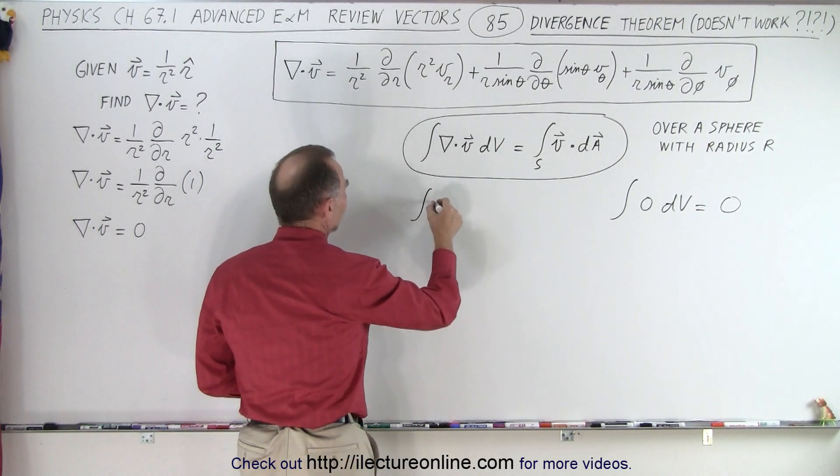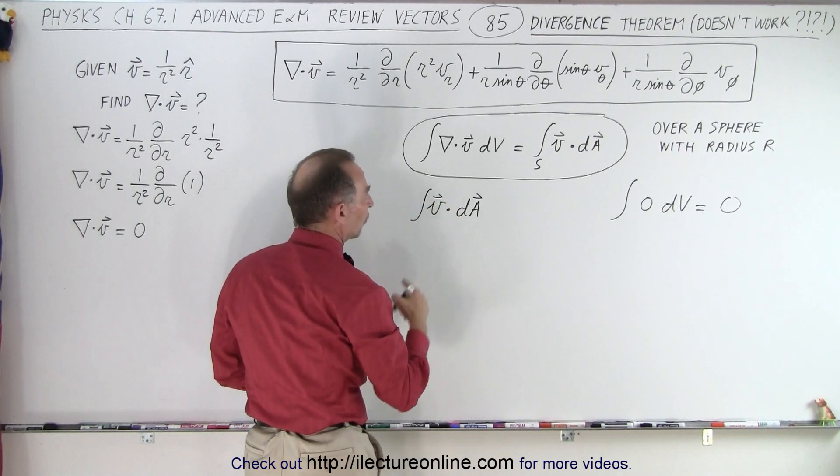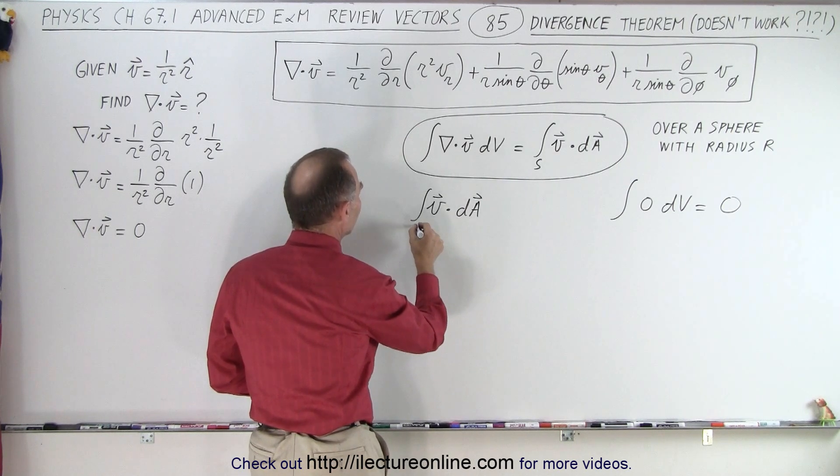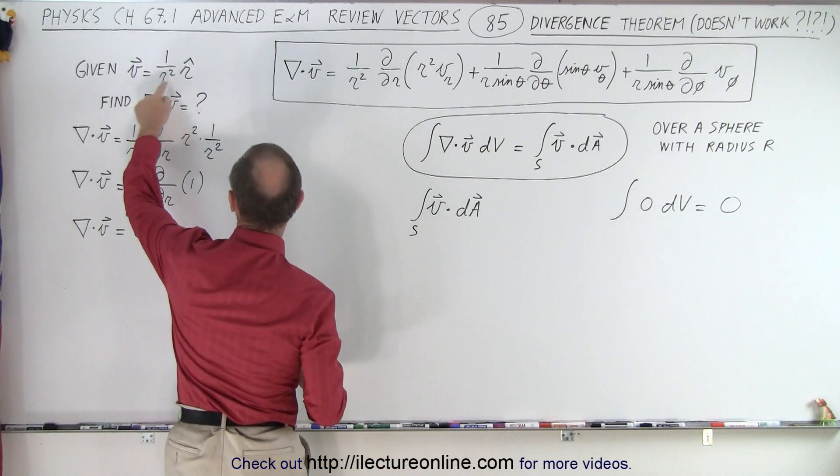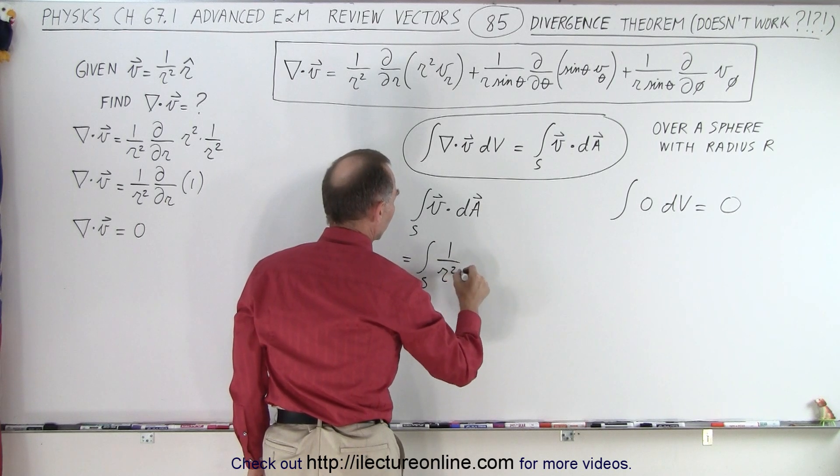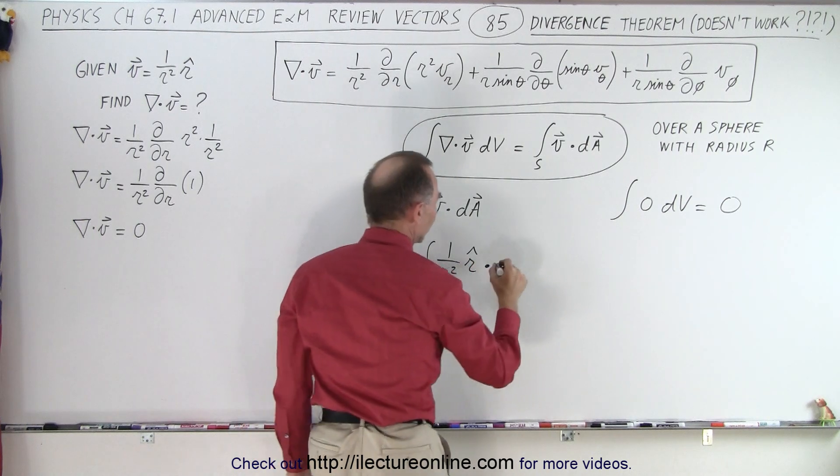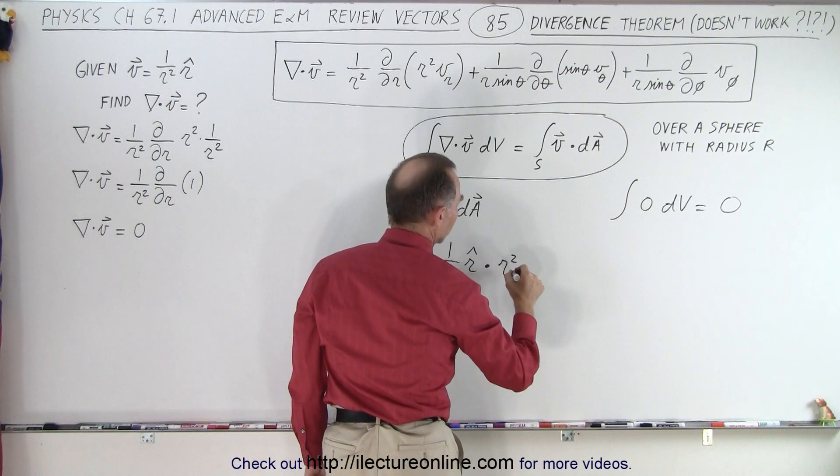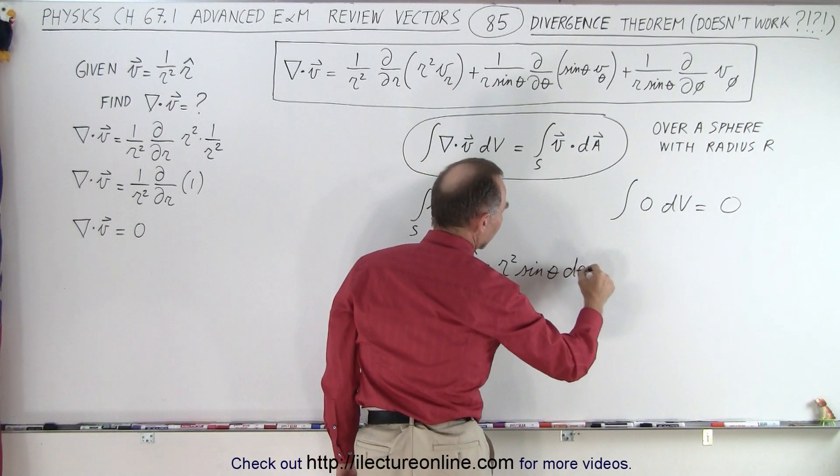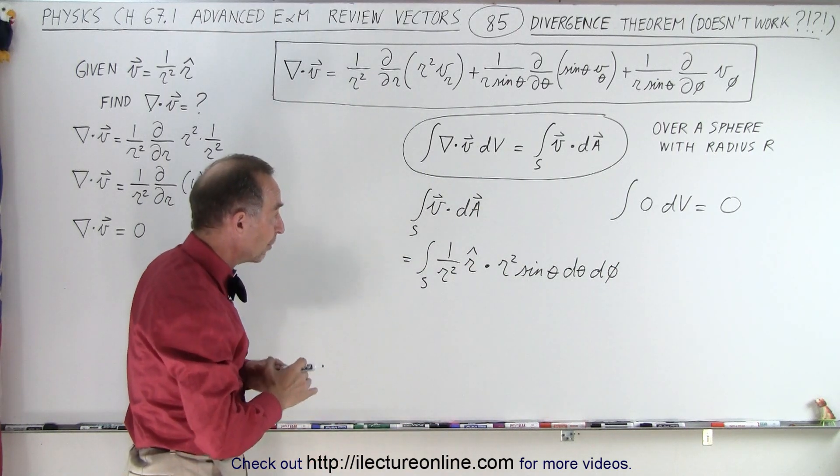What about the right side of the equation? Now we're going to integrate the vector function v times an area element on the surface of that sphere with radius r. So we're going to integrate that over the entire surface. The vector function is equal to 1 over r squared times r. This is equal to the integral over the surface of 1 over r squared times r unit vector with the dot product of dA. That's going to be r squared times the sine of theta. Since it's a surface, that's only d theta d phi. On the surface, the radius always remains the same. That's a constant, so that can come outside the integral sign.